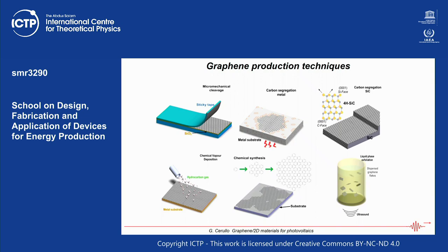CVD is not as high quality as micromechanically cleaved graphene, but it can cover very large surfaces. Another method worth mentioning is liquid phase exfoliation: you start from graphite and using a liquid combined with ultrasounds you exfoliate it to get a dispersion of flakes — sometimes called graphene ink. This may not necessarily be a single layer but a mixture of multilayers, though it can generate large amounts of material easily.